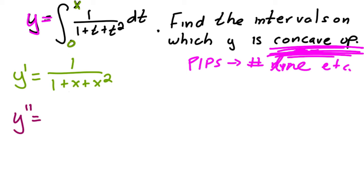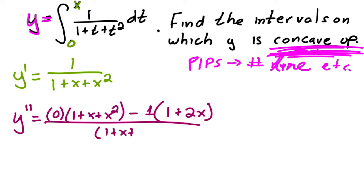Okay, so then the second derivative is just the derivative of this one, which means I need to use the quotient rule. So okay, well then I would have the derivative of the top, which is zero, times one plus x plus x squared, minus one times the derivative of the bottom, which is one plus two x, all over one plus x plus x squared squared is equal to zero.